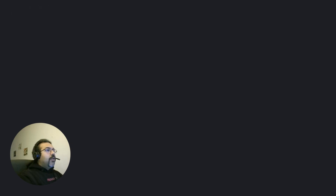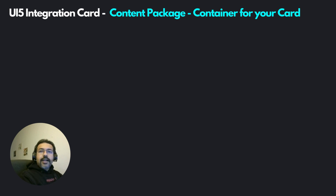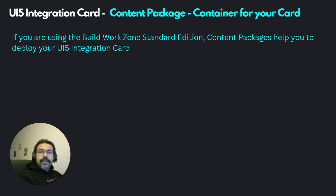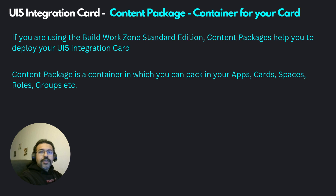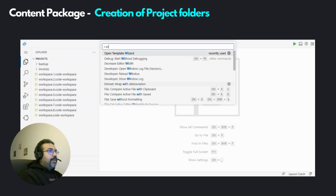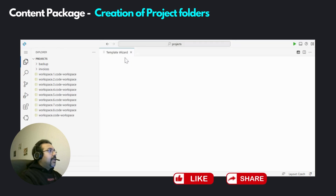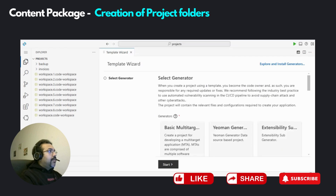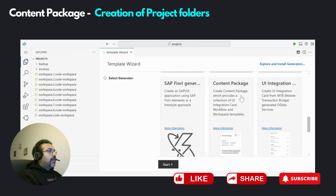When we want to deploy a UI5 integration card in the Build Work Zone, the most important development artifact we are going to need is called the content package. The content package is basically the container that is going to carry your UI5 integration card. So let's start by creating the content package in the Business Application Studio. To speed things up, I will be using the template wizard that has been provided to us.